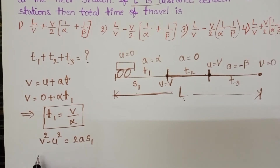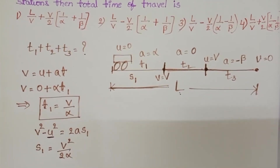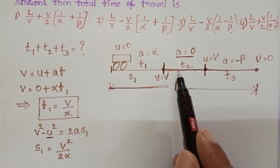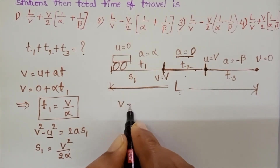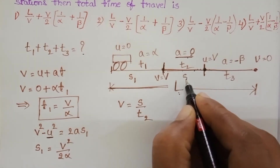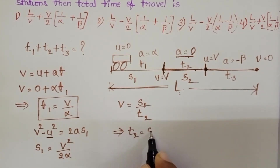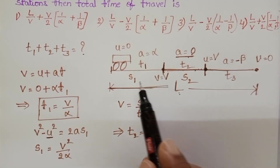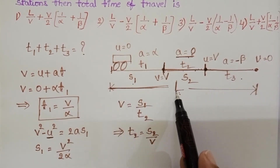In the second part, acceleration is 0. Using the formula velocity equals distance by time, time is T2 and distance is S2. From this, T2 equals S2 by v. But we don't know S2, so first find S1 and S3, then subtract these two from the total distance L.